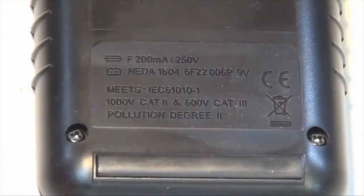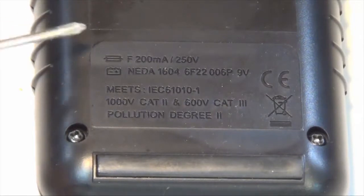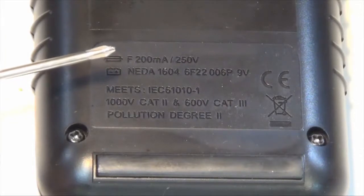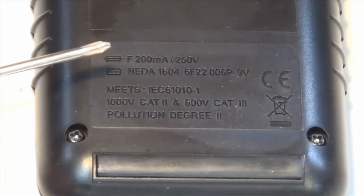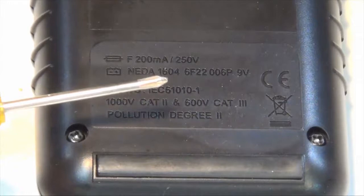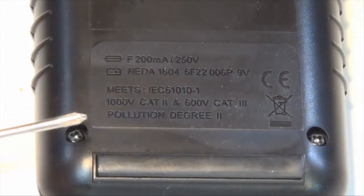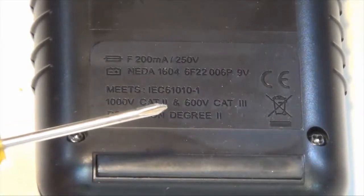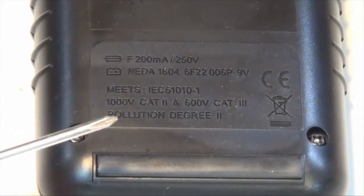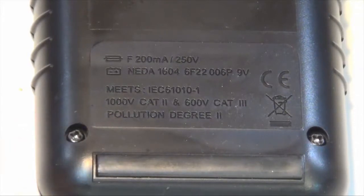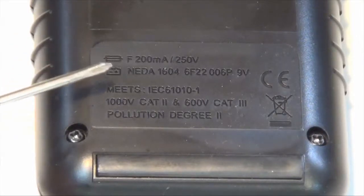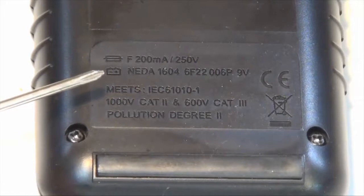If we look carefully at the back of the multimeter, it tells us some of the things that we need to know. First, our fuse is going to be a 200 milliamp fuse with a 250 volt rating. The other thing is that we need a 9 volt battery. It also tells us that we can measure 1,000 volts category 2 and 600 volts category 3, and it has a pollution degree index of 2. I'm mainly interested right now in the size of the fuse and the battery that I need.